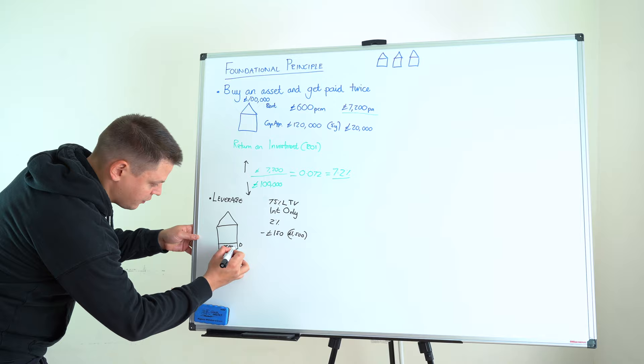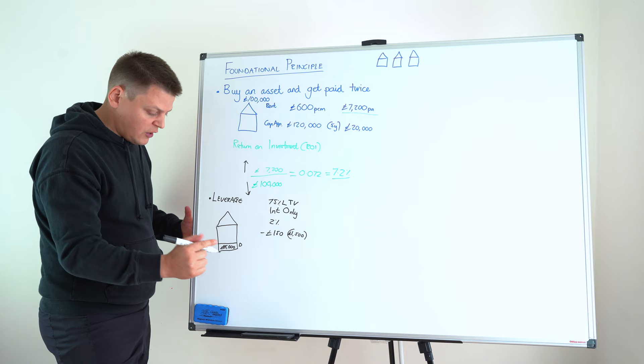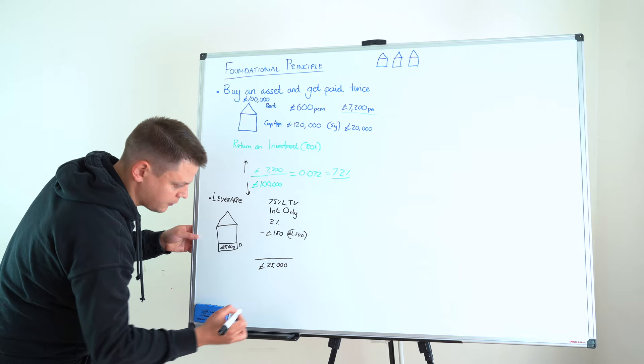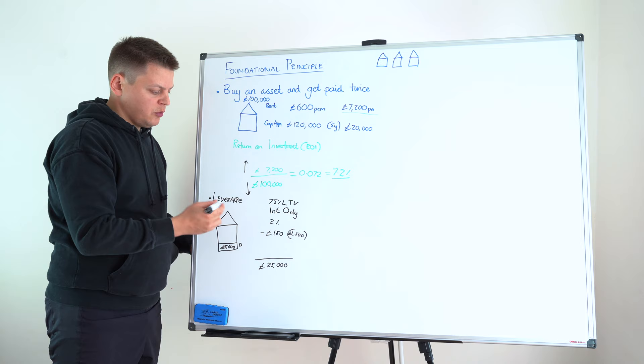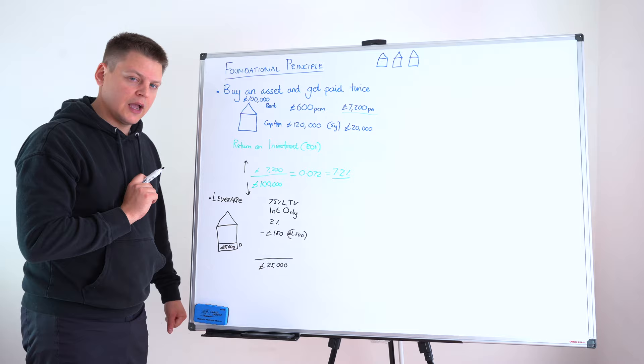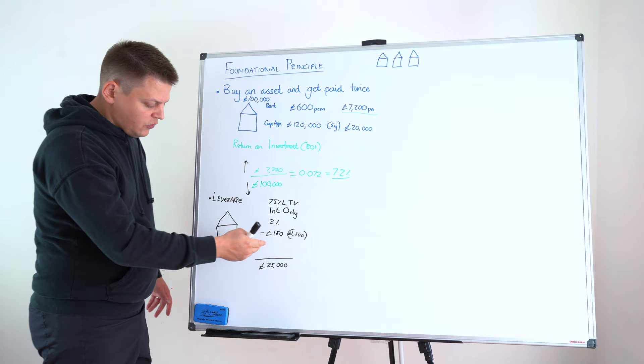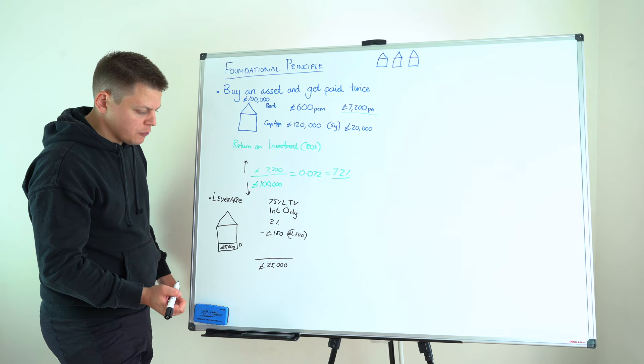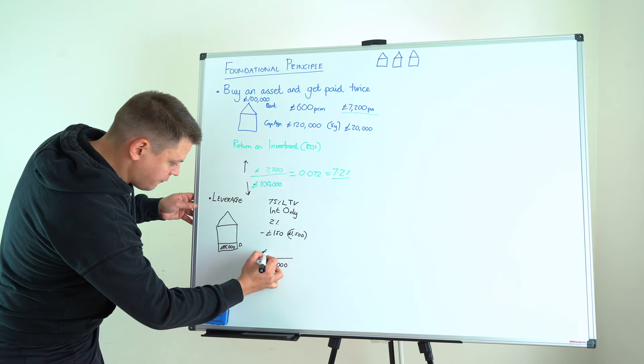And what this now looks like, from a return on investment perspective, is this. Your investment is £25,000. And we said, the way to increase our return on investment was either to increase our return or decrease our investment, which we have just done. We've gone from £100,000 of our own cash to just needing £25,000 cash. So, what about our return? Well, great question. You see, our return is no longer £7,200 because we have to deduct this annual cost, this mortgage cost of £1,500, which means we're now down to £5,700.